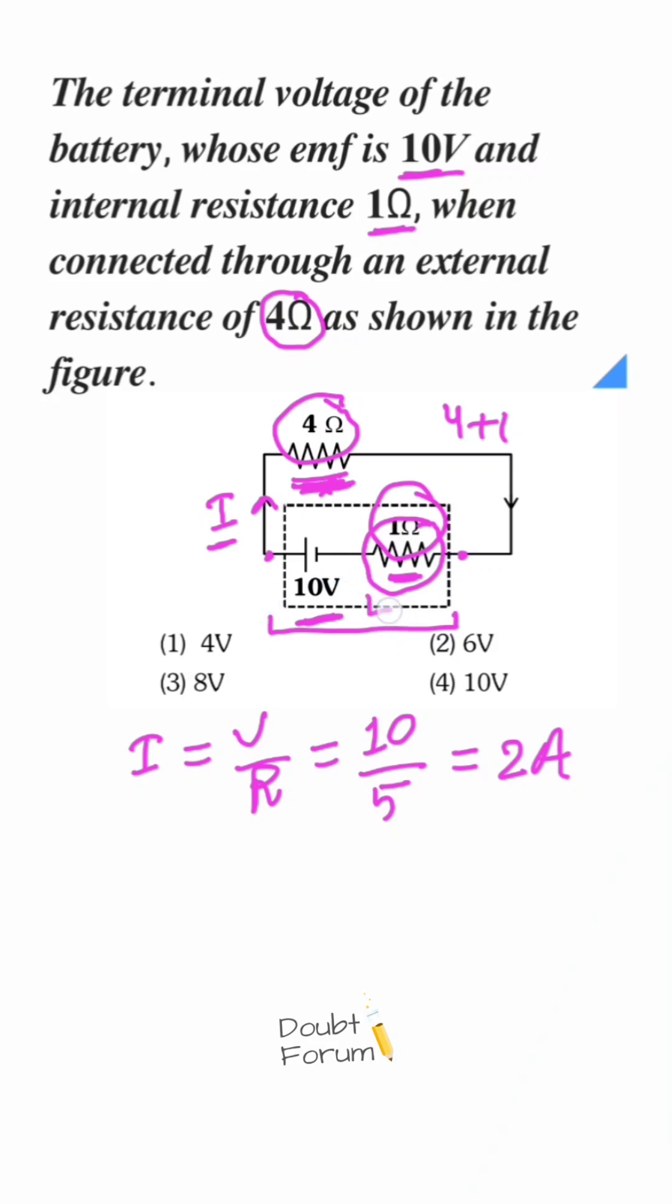because this 2 ampere current is also passing through internal resistance, 1 ohm. Certain voltage drop will take place, and its value would be I into R, that is 2 amps into 1 ohm, that is 2 volts.